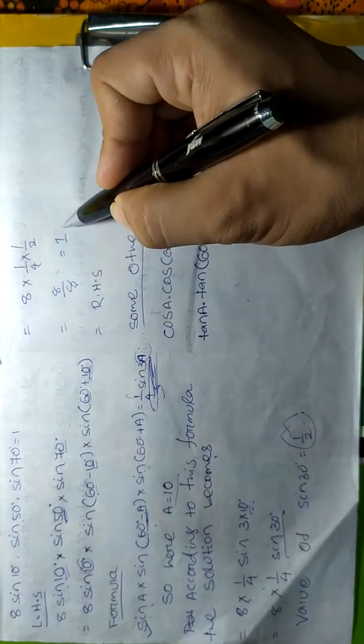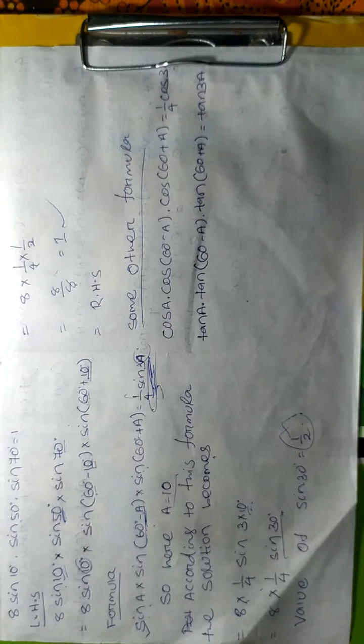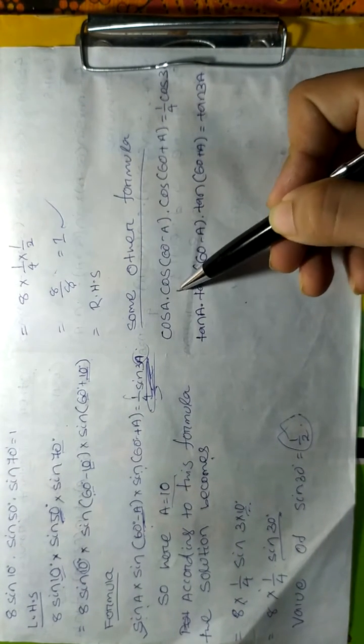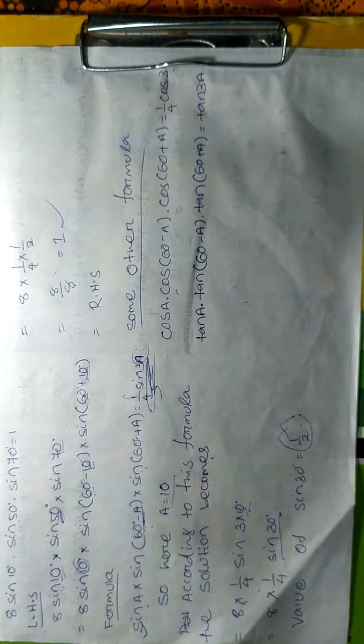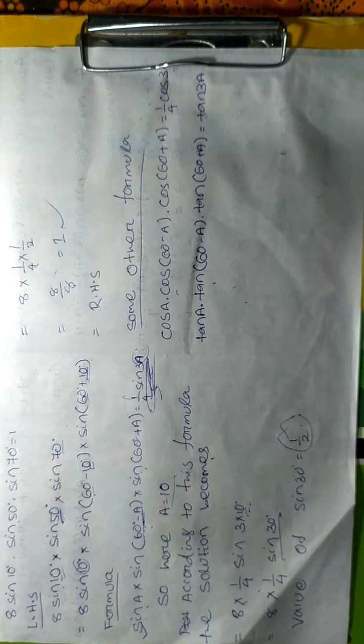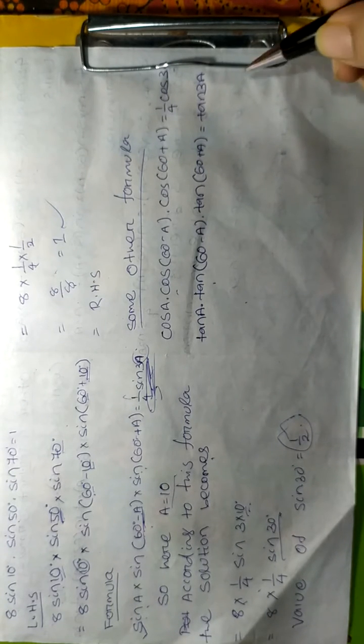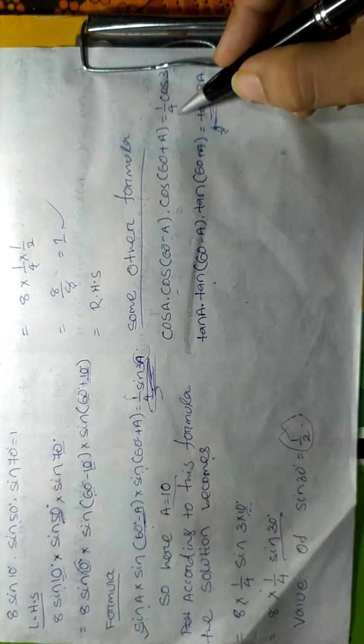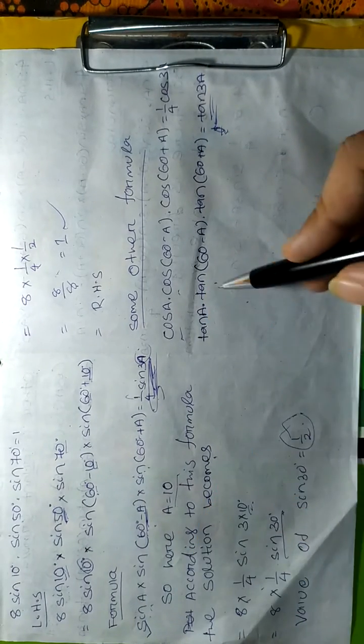So our required answer is proved. There are some other formulas: for cosine, the formula is cos(a) · cos(60° - a) · cos(60° + a) = (1/4)cos(3a). And for tangent, tan(a) · tan(60° - a) · tan(60° + a) = tan(3a). Remember that in the tangent case, 1/4 is not present, but in the case of cosine and sine, there is 1/4 present.